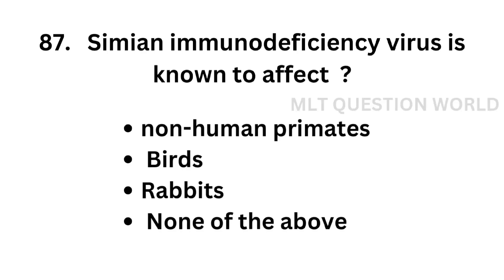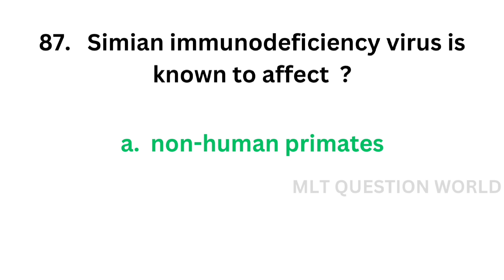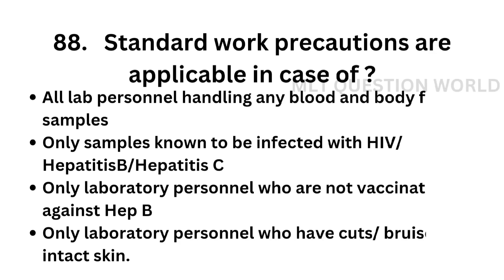Question number 87. Simian Immunodeficiency Virus is known to affect: Option A: Non-Human Primates, Option B: Birds, Option C: Rabbits, Option D: None of the above. The correct answer is Option A — Non-Human Primates. Non-Human Primates are affected by Simian Immunodeficiency Virus.